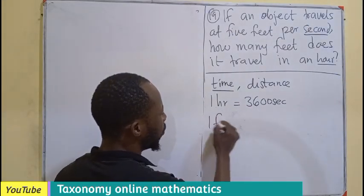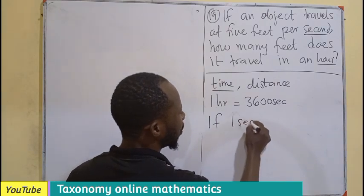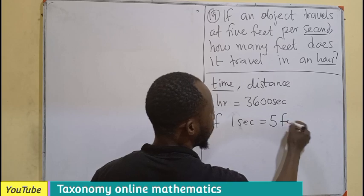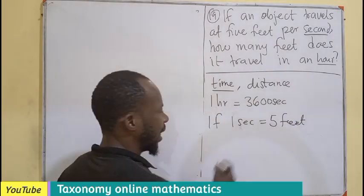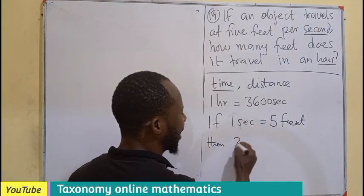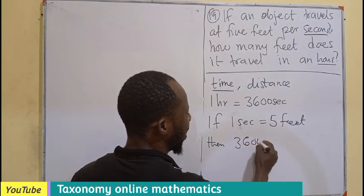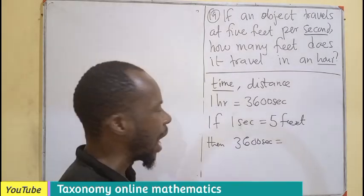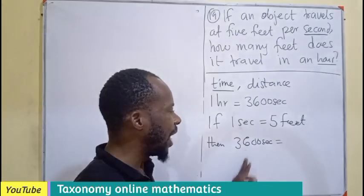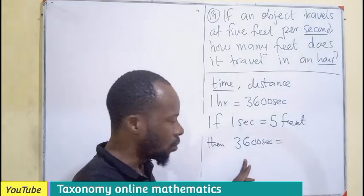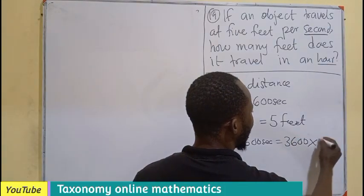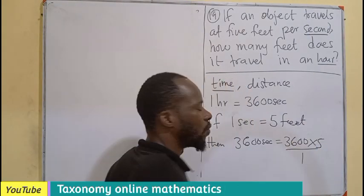So, we are going to say that if we can use one second to be able to move or travel five feet, then if we are now increasing the seconds to 3,600 seconds, I believe you know we are going to have more of the feet traveled. So, if more, let's multiply. That will be 3,600 times 5 over 1.